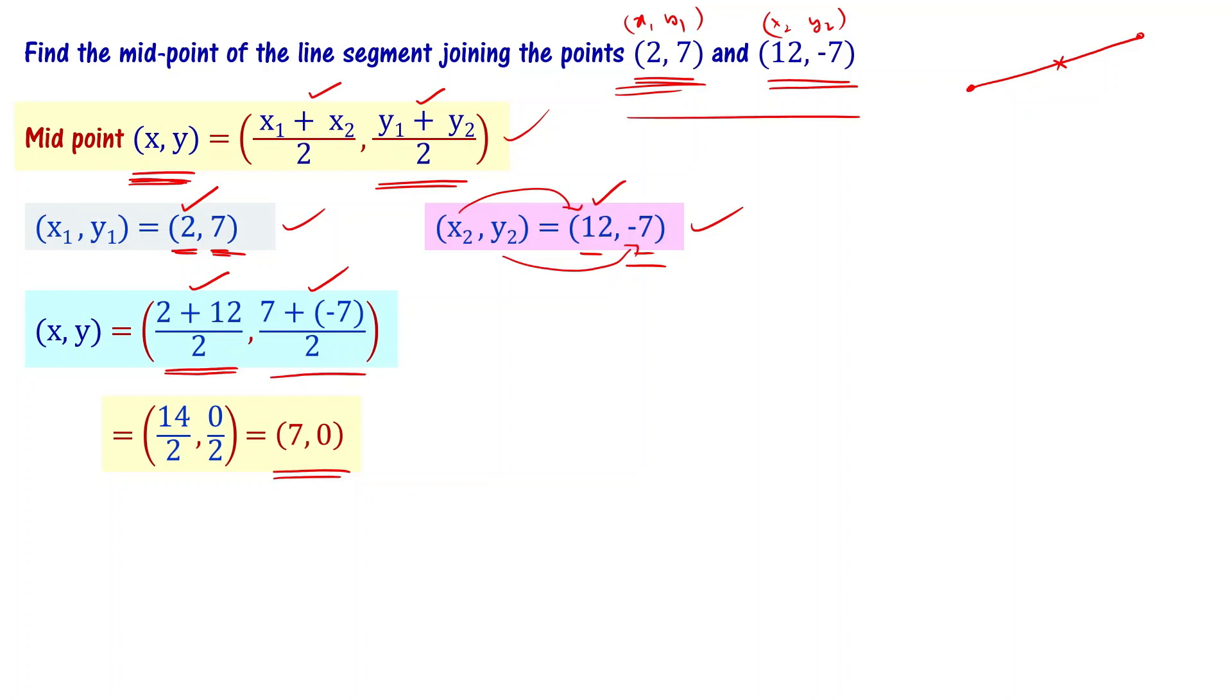What is the midpoint of these two points? (7,0). The midpoint of the line joining the points (2,7) and (12,-7) is (7,0). Understood?